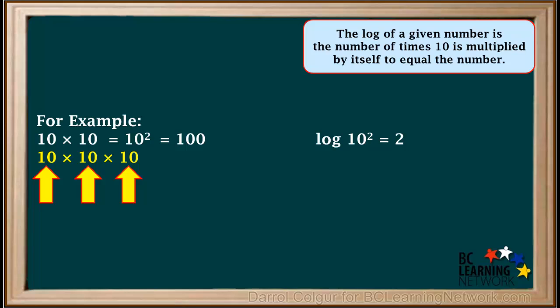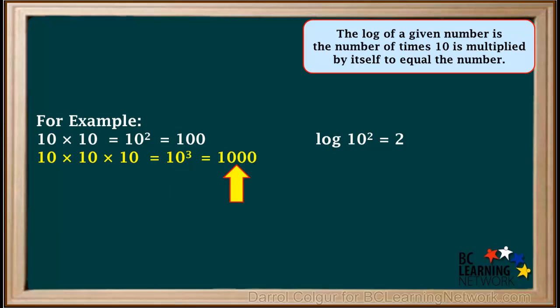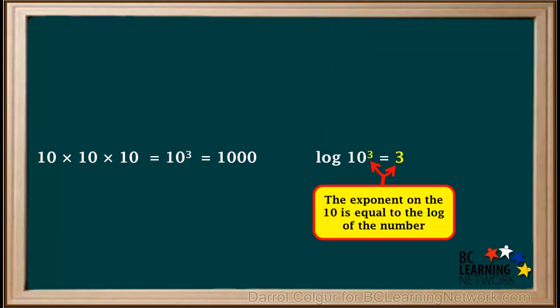10 multiplied by itself 3 times is equal to 10 to the power of 3, or 1000. The log of 1000, or 10 to the power of 3, is equal to 3. If a number is simply 10 to the power of something, the exponent on the 10 is equal to the log of the number.